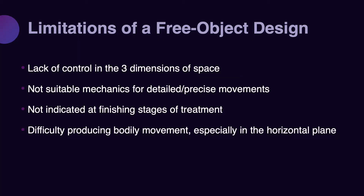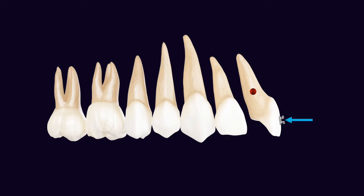Another limitation of free object design is when we are designing a bodily movement, especially in horizontal movement. To have a bodily movement, the force needs to pass through the center of resistance of the tooth. It's very difficult anatomically, especially when applying a horizontal force, to design a mechanic where the force passes through the center of resistance. These limitations make free object design not the design of choice, especially when we have bodily movement in the horizontal direction.